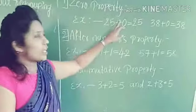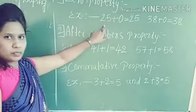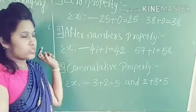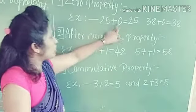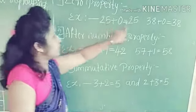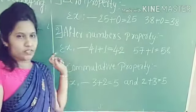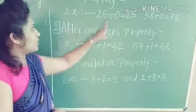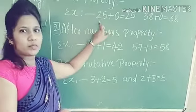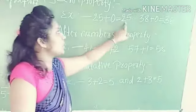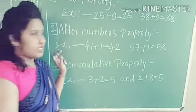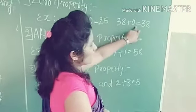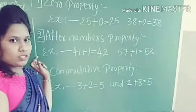Children, when we add 0 to a number, the sum is the number itself. For example, 25 plus 0 is equal to 25. And 0 plus 25 is also equal to 25. Let's see one more example: 38 plus 0 is equal to 38.